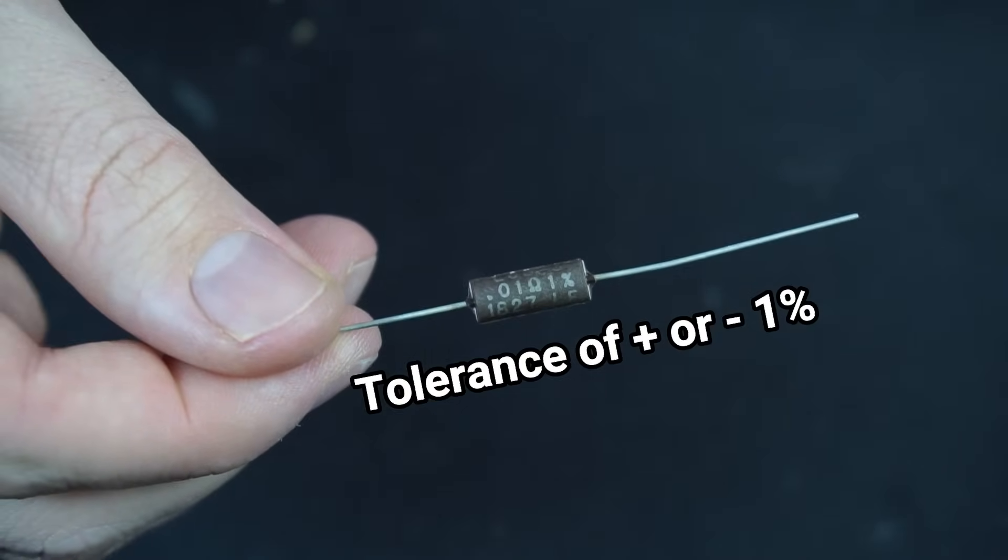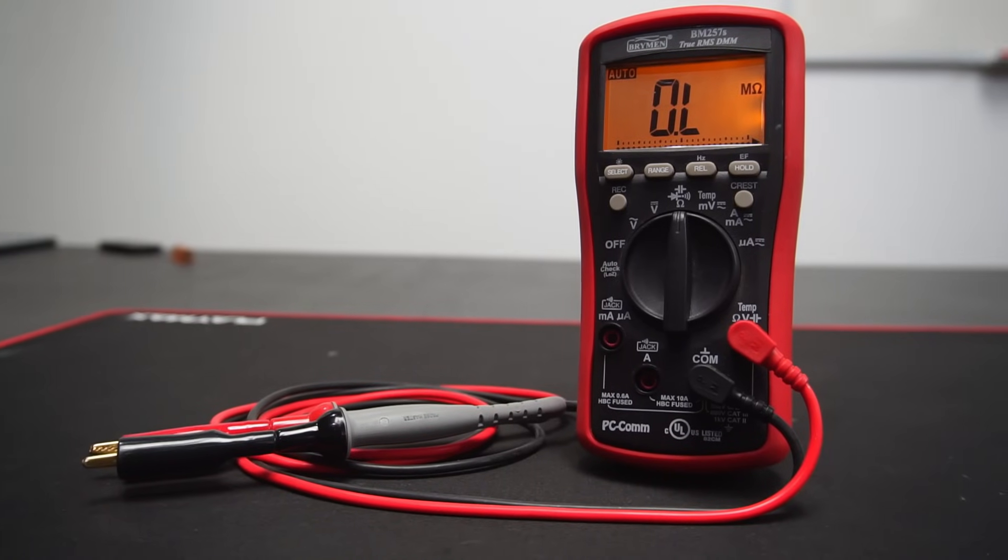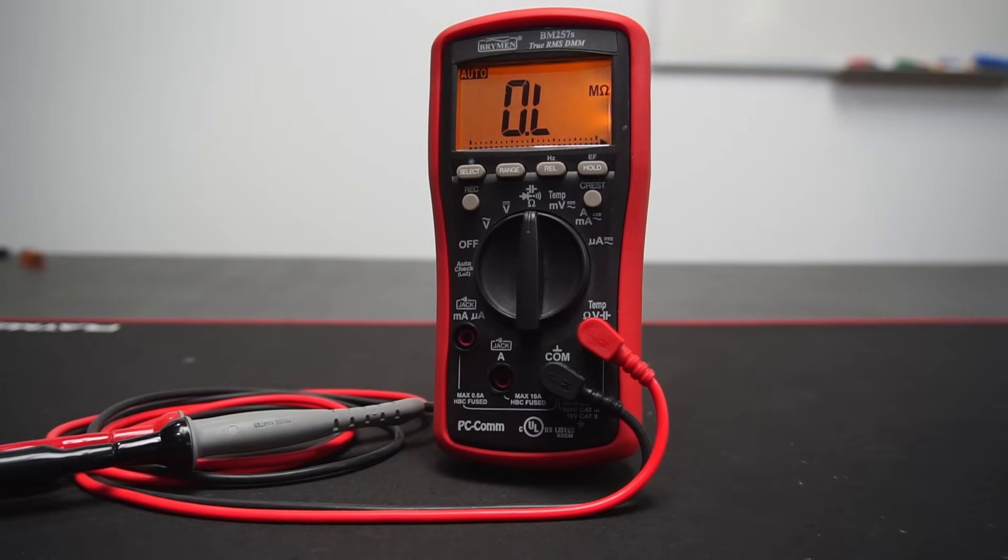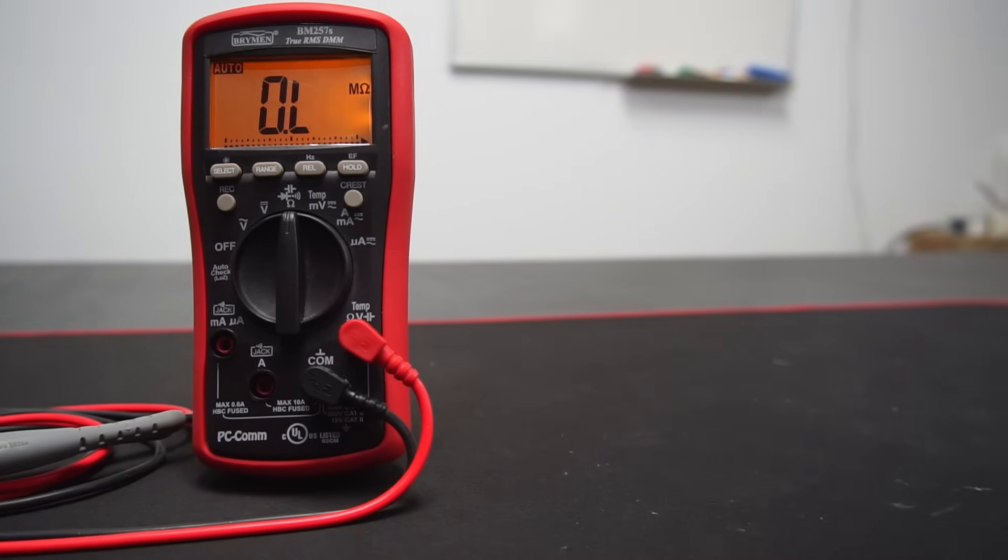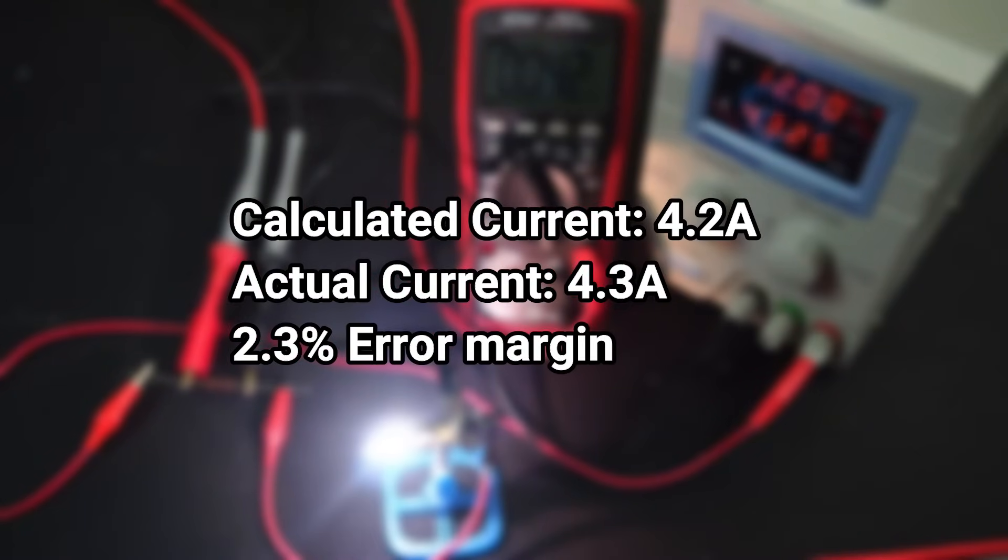Now you might be wondering why my calculation was 100 milliamps less than the ammeter displays. That's down to a couple of factors. For instance, the shunt I'm using has a tolerance range of plus or minus one percent. And even though my Brymen meter is a fantastic meter, measuring down in the sub millivolt range with pinpoint precision is not what this meter is intended to be used for. So we'll have to forgive this 2.3 percent error margin.